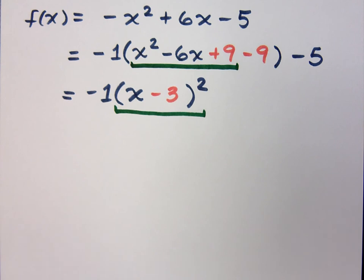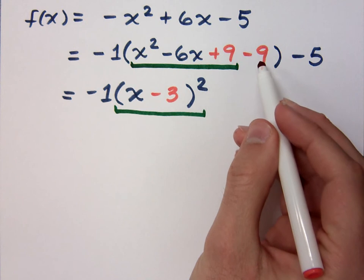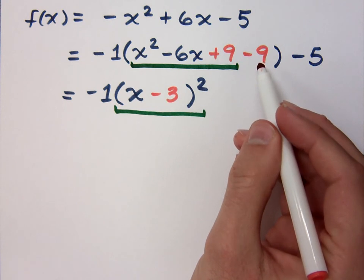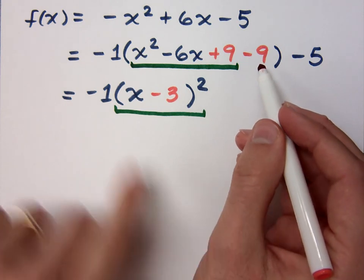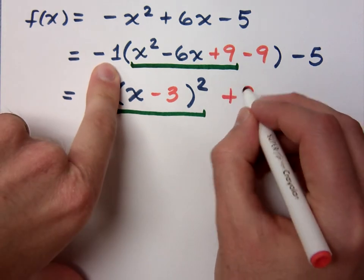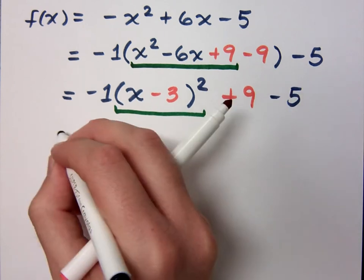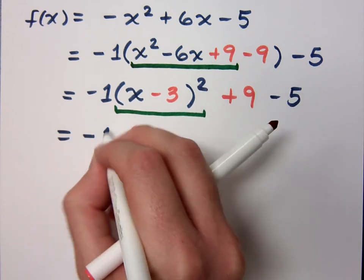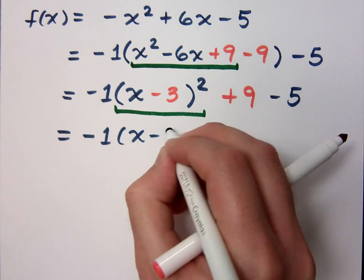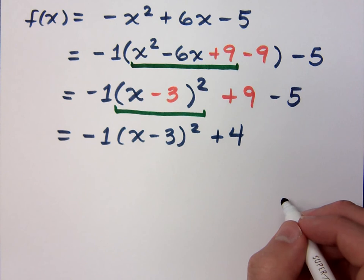All right, so let's see. All of this stuff gave me x minus 3 squared. What about this minus 9 on the inside? What do we do with him? So I get what? Positive 9, and here is my minus 5. So when I put this in its final form, I have negative 1 times x minus 3 squared plus 4. Do you all agree with that?